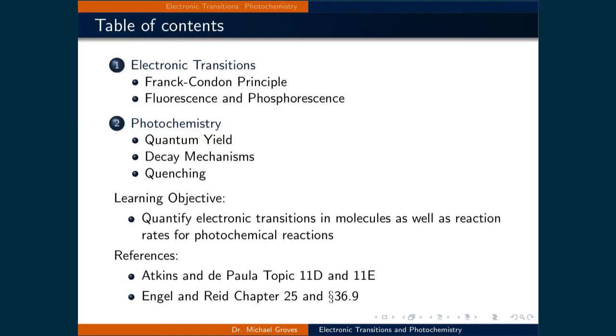This lecture will be broken down into two parts. In the first part, we will examine how and where electronic transitions occur. And in the second part, we will apply kinetics concepts to quantify the rate of photochemical reactions.